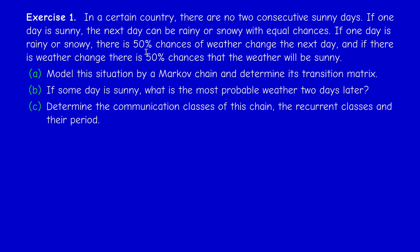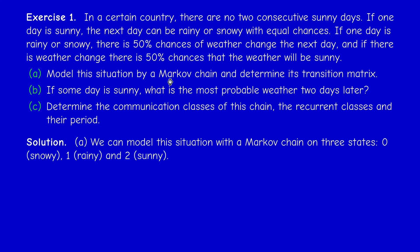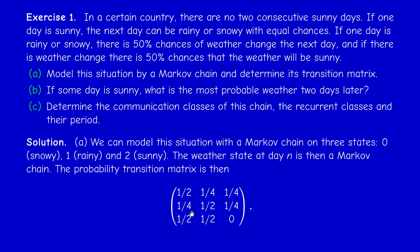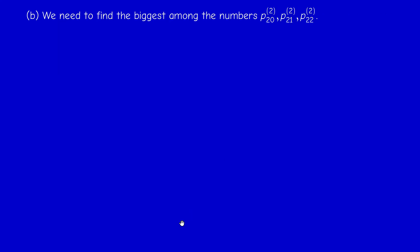So there is also a 50% chance of no weather change. The corrected transition matrix is given by: one half, one over four, one over four, one over four, one half, one over four. In the first video it was incorrectly written as one, one half, one over four — that was the mistake, but the reasoning was correct.